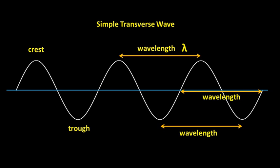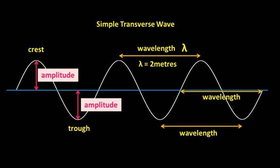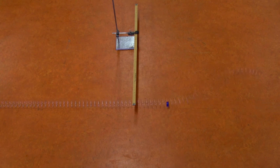So if the wavelength was 2 meters, I would label this diagram by writing lambda equals 2 meters, but I would read this as wavelength equals 2 meters. A wave's amplitude is the height of the crest of the wave, or the depth of the trough. This wave has an amplitude of about 40 centimeters.